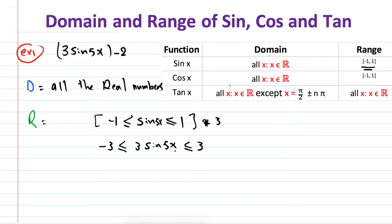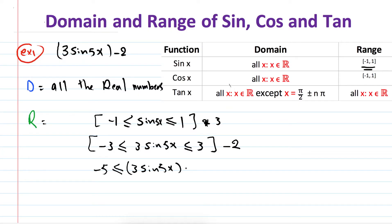Now I add -2 to everything: -3 - 2 ≤ 3 sine(5x) - 2 ≤ 3 - 2, which gives -5 ≤ 3 sine(5x) - 2 ≤ 1. So the range of 3 sine(5x) - 2 is between -5 and 1, including both endpoints.